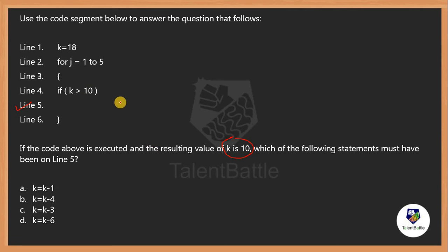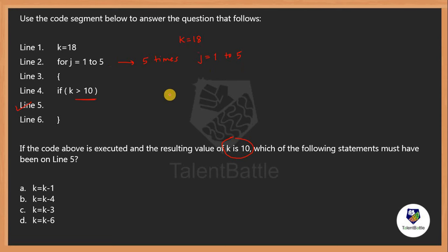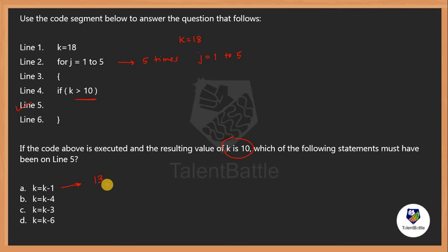The value of k is initialized to 18, then we enter a loop which executes 5 times for j equals 1 to 5. Every iteration checks if k is greater than 10. For option 1, k decrements by 1 each time: 17, 16, 15... After 5 iterations the condition is still true and k ends at 13, which is not the expected value of 10. So we discard option A.